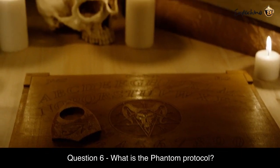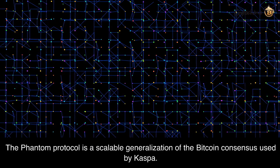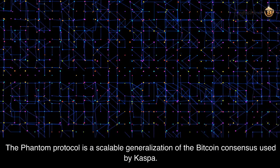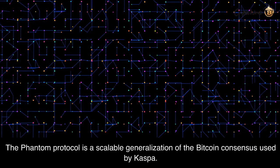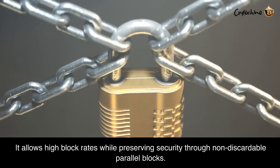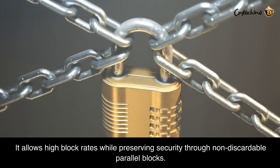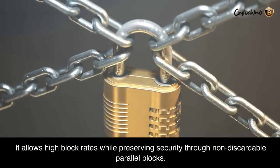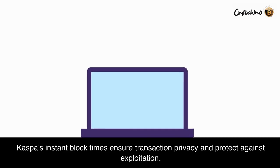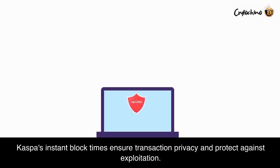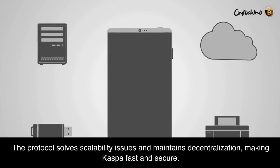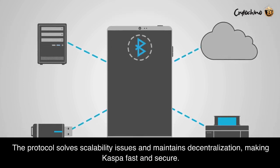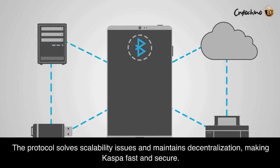Question 6: What is the phantom protocol? The phantom protocol is a scalable generalization of the Bitcoin consensus used by KASPA. It allows high block rates while preserving security through non-discardable parallel blocks. KASPA's instant block times ensure transaction privacy and protect against exploitation. The protocol solves scalability issues and maintains decentralization, making KASPA fast and secure.